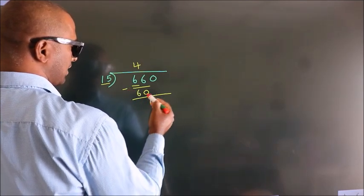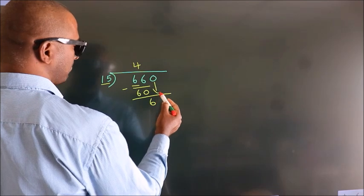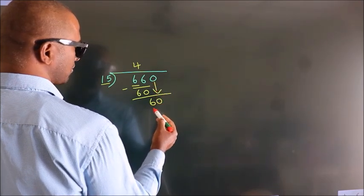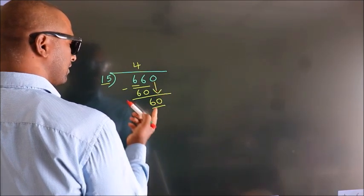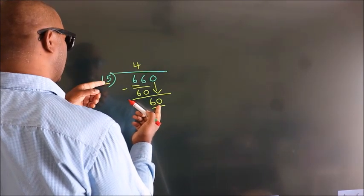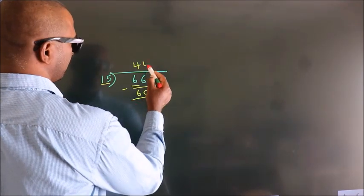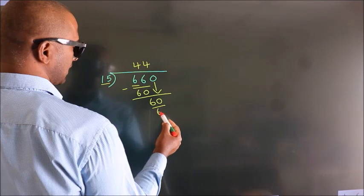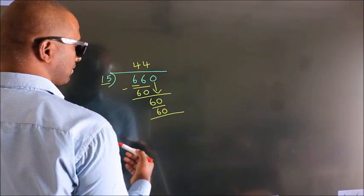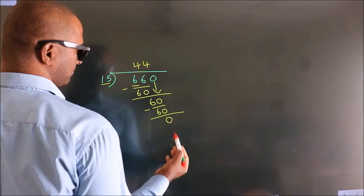After this, bring down the beside number. So 0 now — so 60. When do we get 60 in the 15 table? 15 fours are 60. Now we subtract — we get 0.